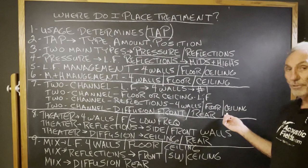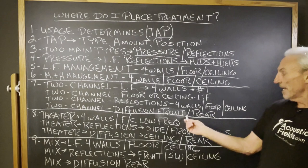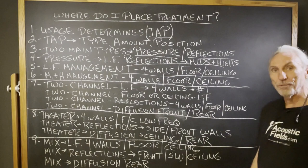For two-channel, we have reflections on the four walls, floor and ceiling — just like we have pressure, we have the reflections. Remember, pressure and reflections are two separate things. So there's a hierarchy of treatment. Diffusion is kind of the last thing — front and rear — in a two-channel room. If you've got all of these other issues resolved and treated correctly, you can bring in diffusion. Diffusion will make your room sound larger.